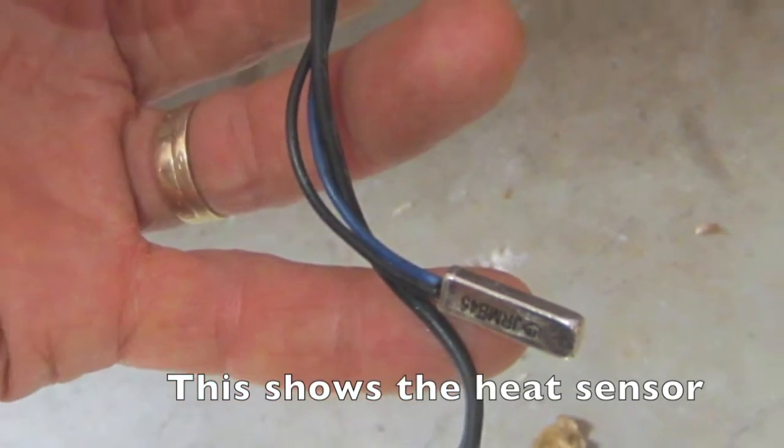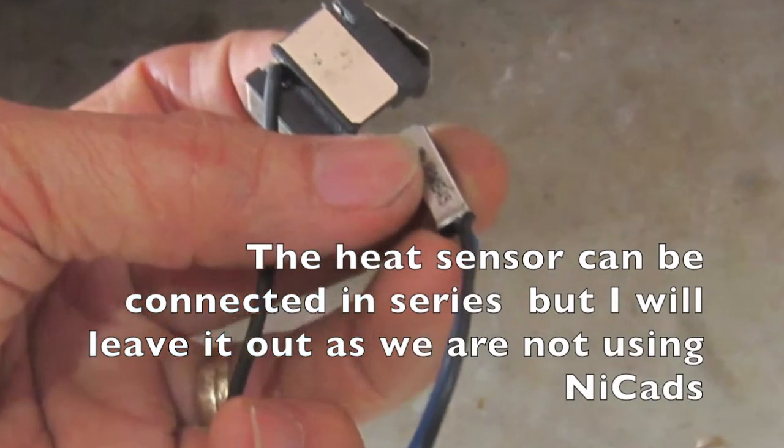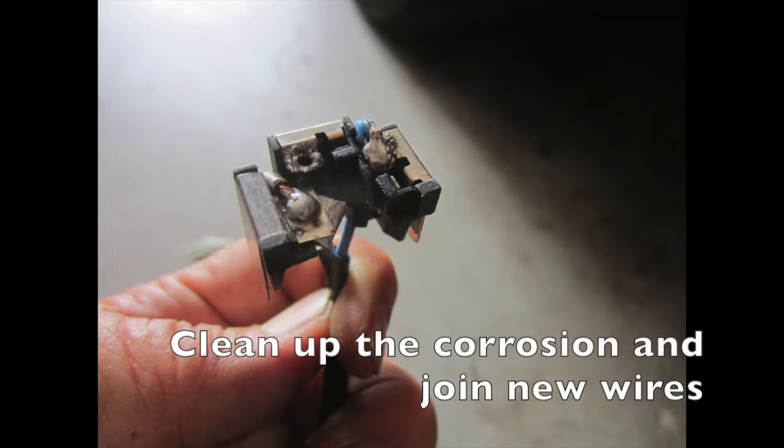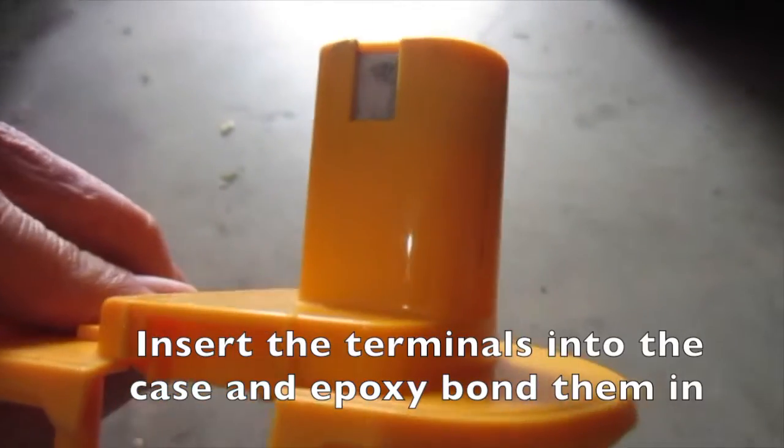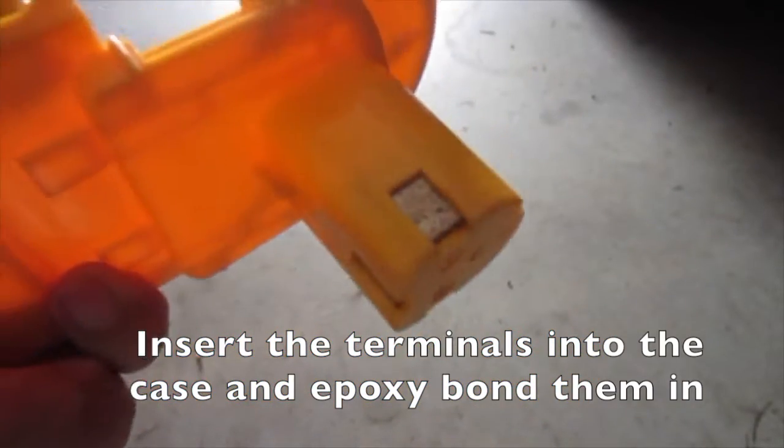This shows the heat sensor. The heat sensor can be connected in series but I will be leaving it out as I'm using lithium ions. Clean up the corrosion and join the new wires. Insert the terminals into the case and epoxy bond them in.